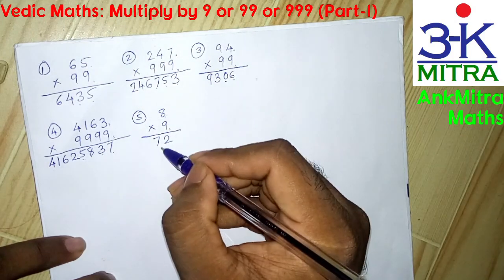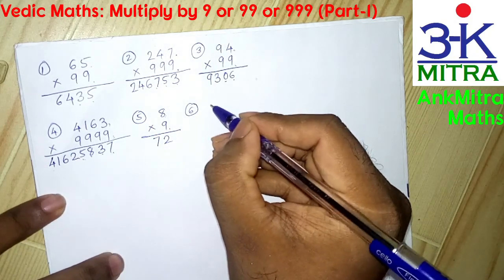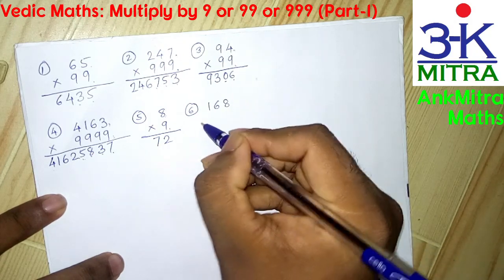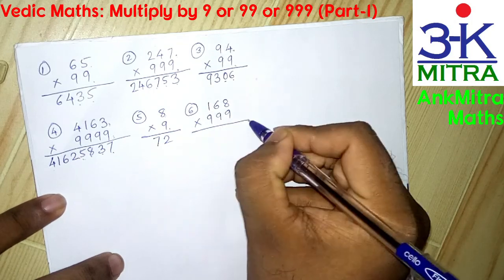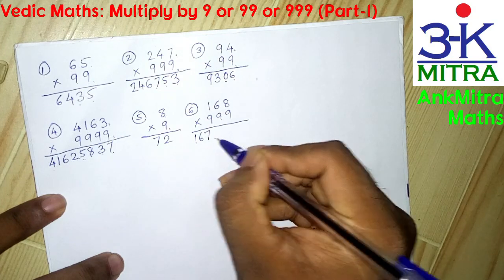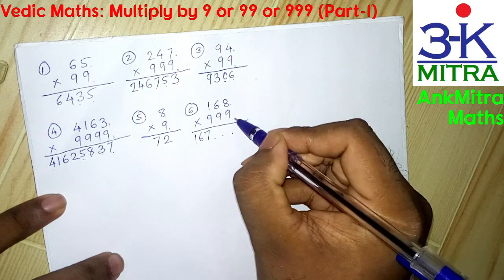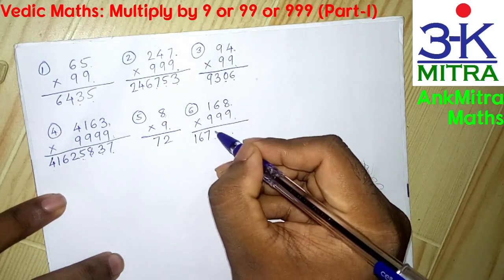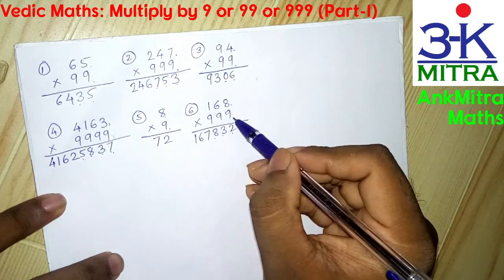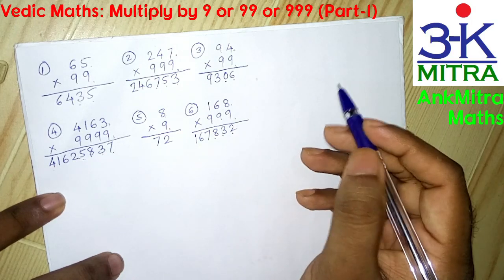Let's take a three-digit number: 168 multiplied by 999. We reduce 1 from 168 to get 167, and we have 3 places to fill. Subtracting 168 from 1000 gives us 832. So the answer for 168 multiplied by 999 is 167832.